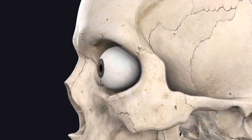The eyeball occupies the anterior two-thirds of the orbital cavity and projects beyond the orbital margin, such that when a sharp needle is introduced from the lateral margin to the bridge of the nose, it will traverse behind the lens. The projecting supraorbital margin and the bridge of the nose prevent a flat surface from striking the eyeball.